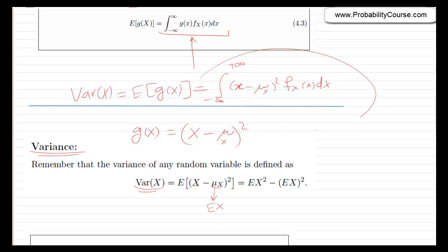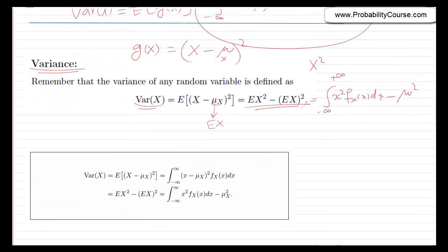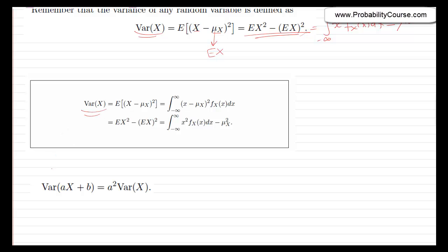So I can find variance of x using that integral. Or I can use the equivalent formula: the integral from minus infinity to plus infinity of x squared times f_X(x) dx, minus mu_x squared. So variance of x for a continuous random variable is the expected value of (x minus mu_x) squared, which can be obtained using either of these two integral forms.